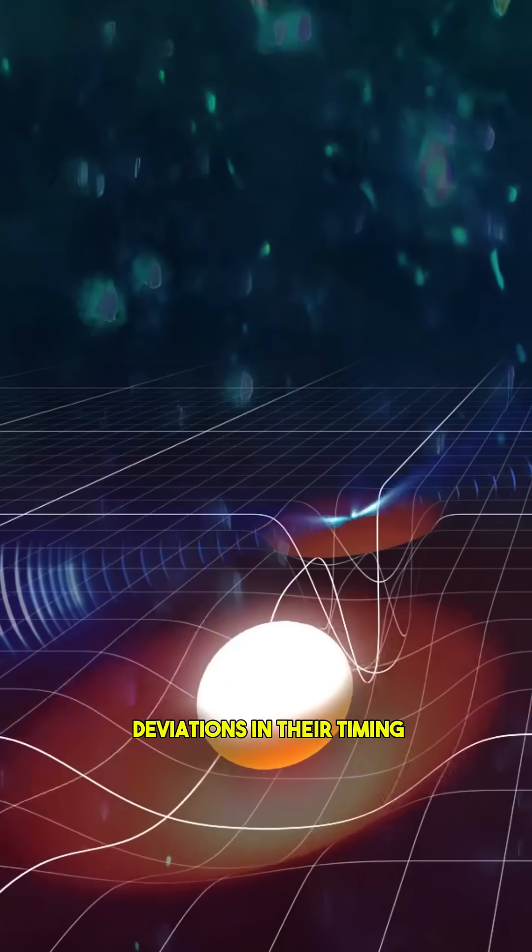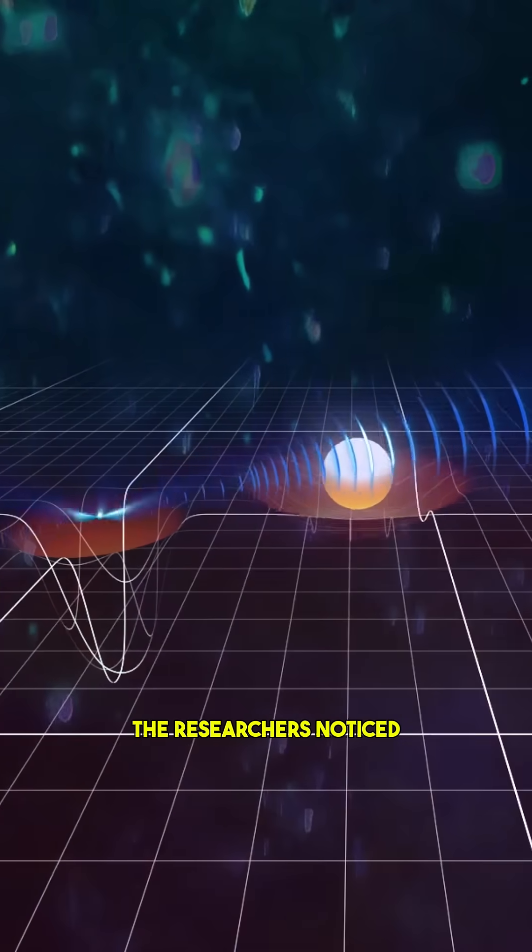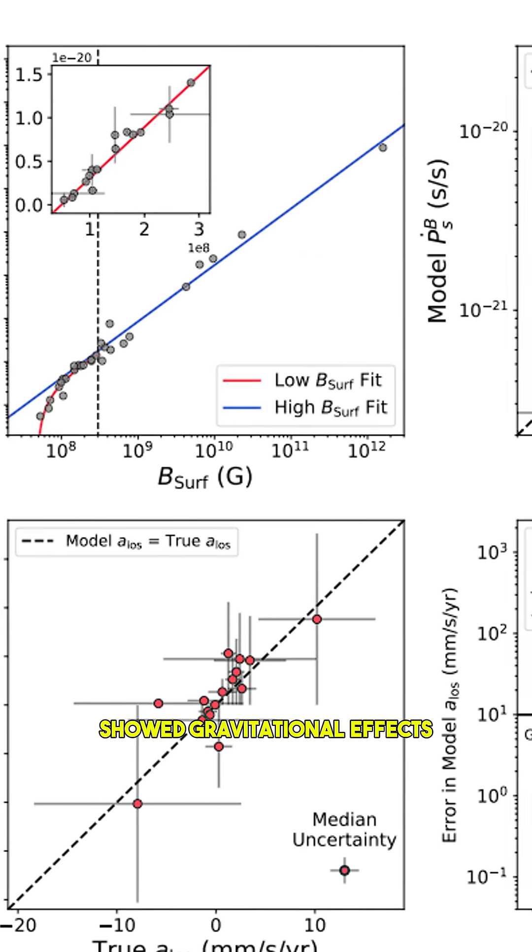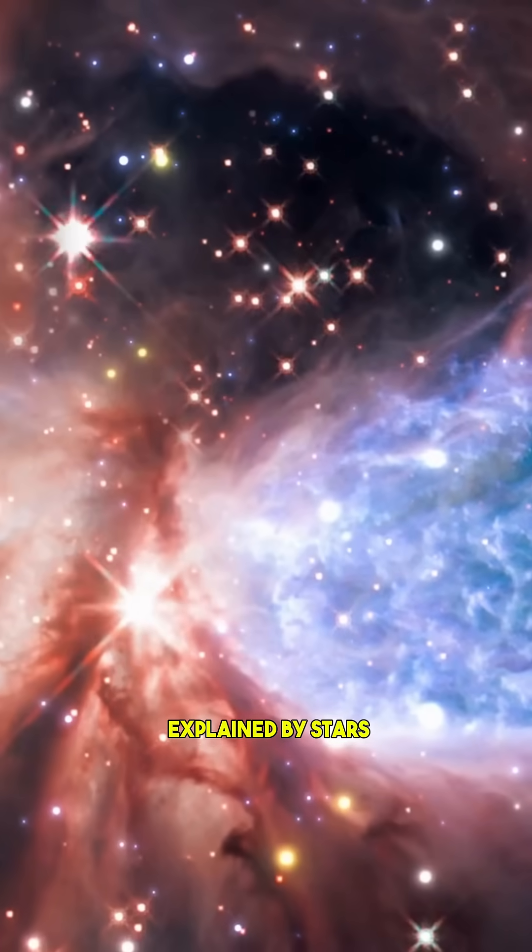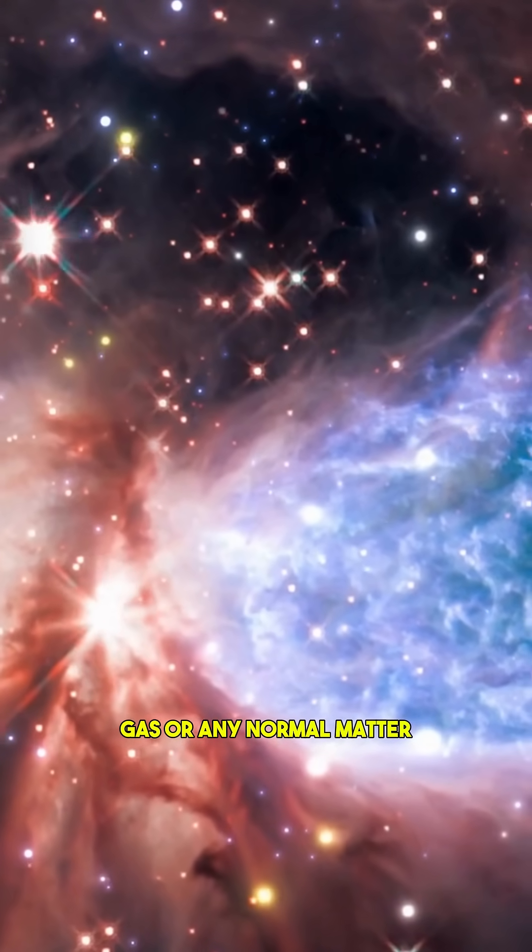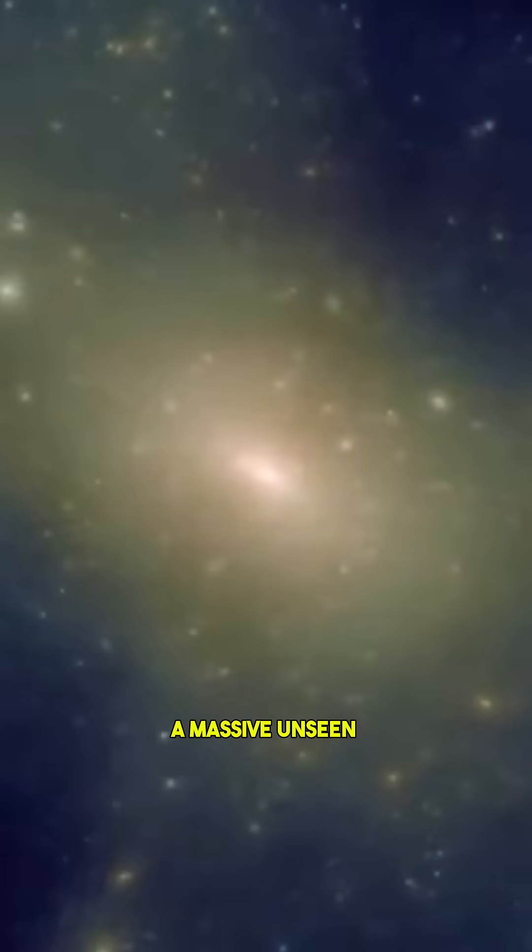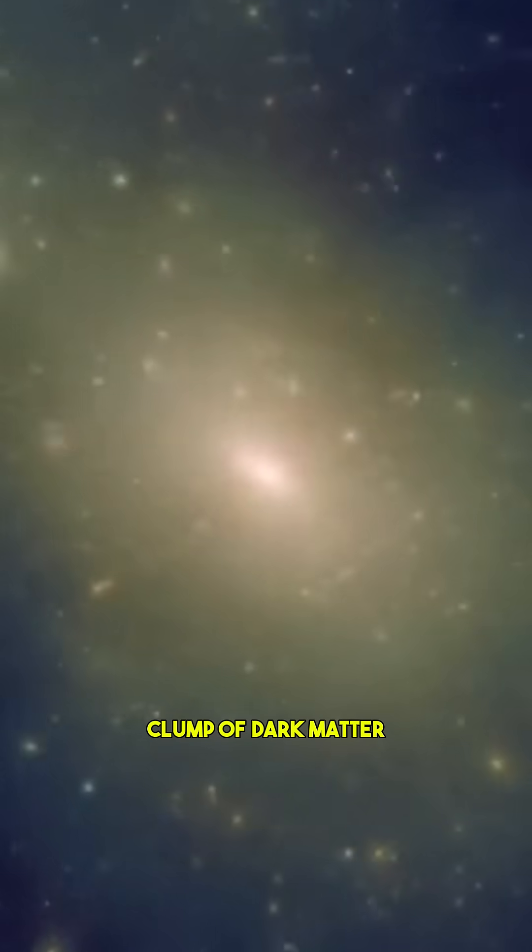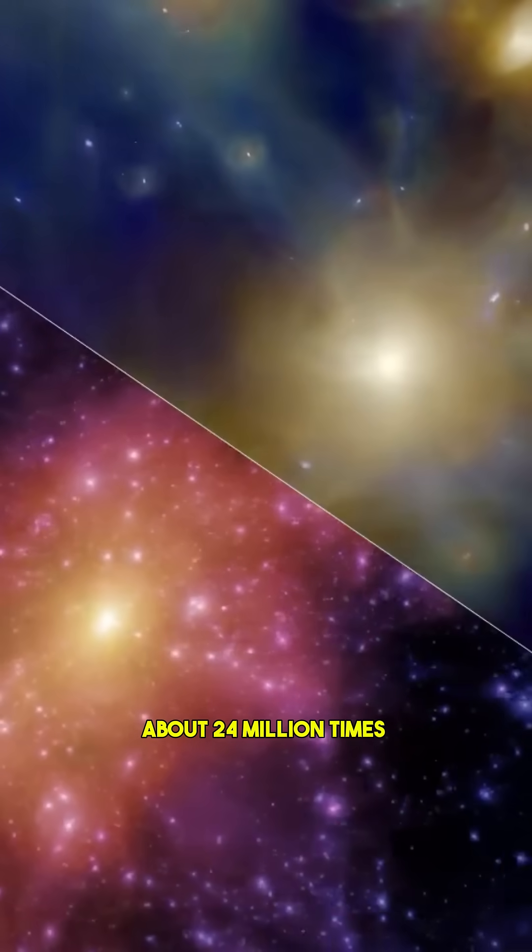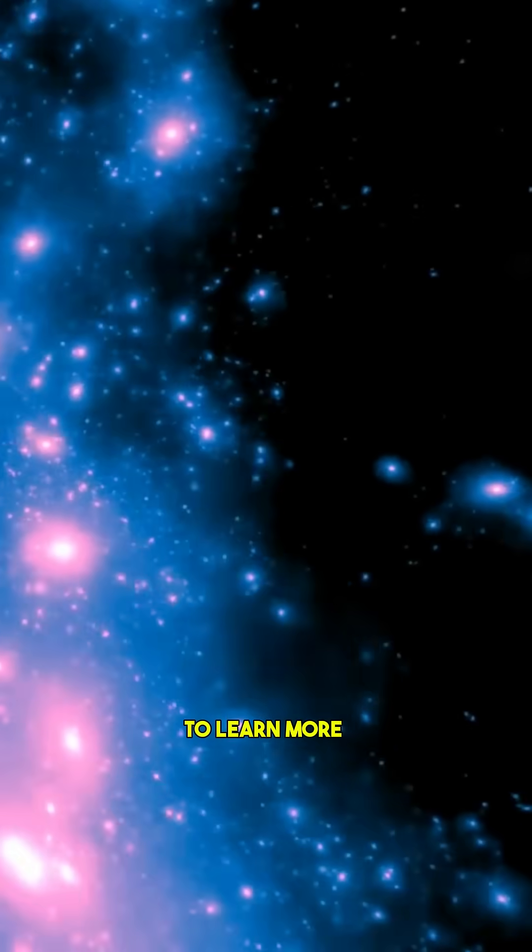By studying tiny deviations in their timing, the researchers noticed something unusual that showed gravitational effects that couldn't be explained by stars, gas, or any normal matter. The only explanation left? A massive, unseen clump of dark matter – about 24 million times the mass of the sun.